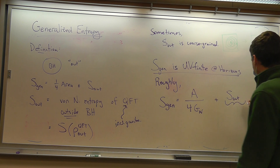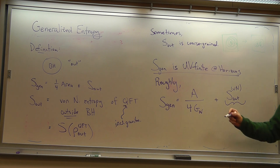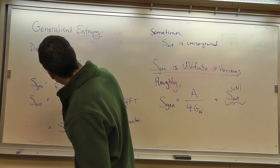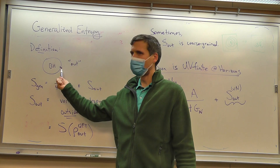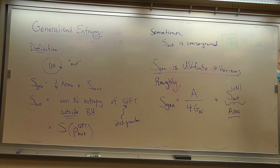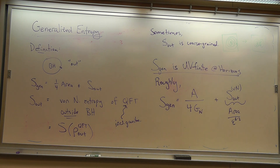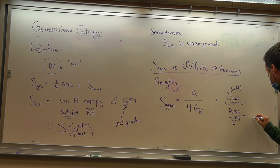S_out is the von Neumann entropy of the quantum fields. We know the structure of von Neumann entropy in quantum field theory is that it's UV divergent. The divergence in S_out comes from the short distance stuff across the horizon — there's entanglement in all modes across the horizon to arbitrarily short distances. So the leading divergence is an area term. The divergence is set by the UV cutoff to the appropriate power, then there are sub-leading divergences, and then there are finite terms.